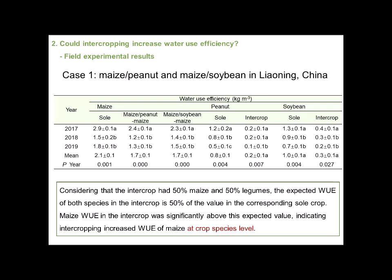Here, we take water use efficiency in maize-soybean and maize-peanut intercropping systems as an example. Considering that the intercrop has half maize and half legumes, the expected WUE of both species in intercropping is half the value in the corresponding sole crop. Maize WUE in intercropping was significantly above this expected value, indicating that intercropping increased the water use efficiency of maize at the crop species level. However, due to this limitation, comparing WUE between intercropping and sole crops has some uncertainty.